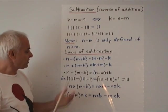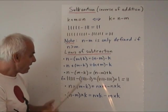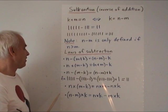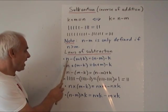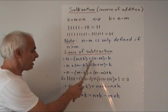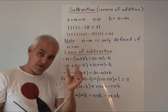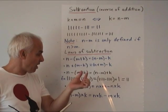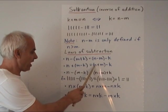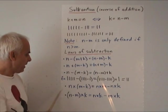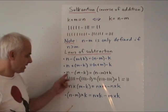The laws of subtraction are analogous but somewhat different to the associative and distributive laws for addition. The first one is: N minus (M plus K) equals N minus M minus K. All these operations are binary — they only take two at a time. And: N plus M minus K equals N plus M minus K. Perhaps the trickiest one: N minus (M minus K) equals N minus M plus K.